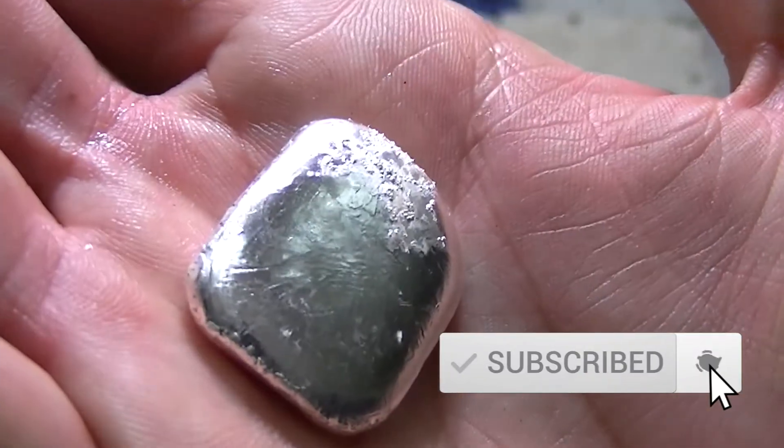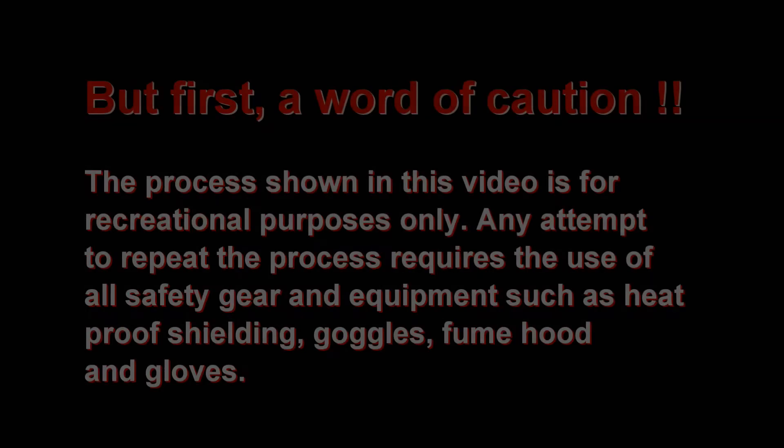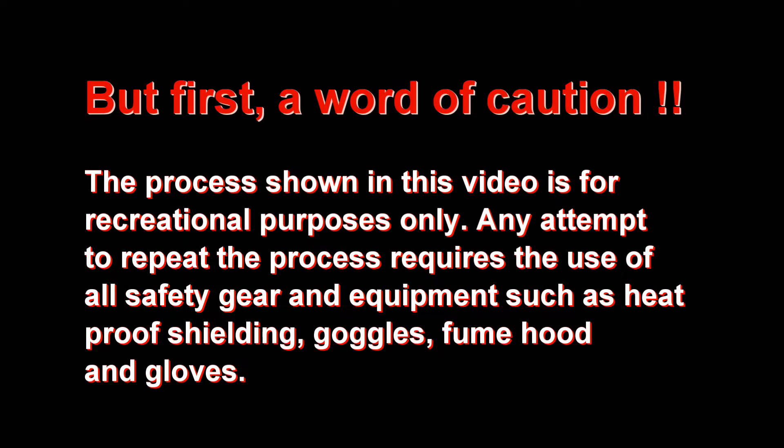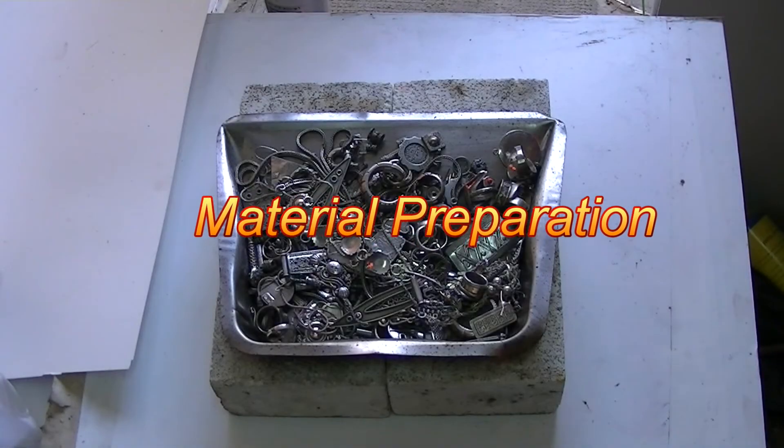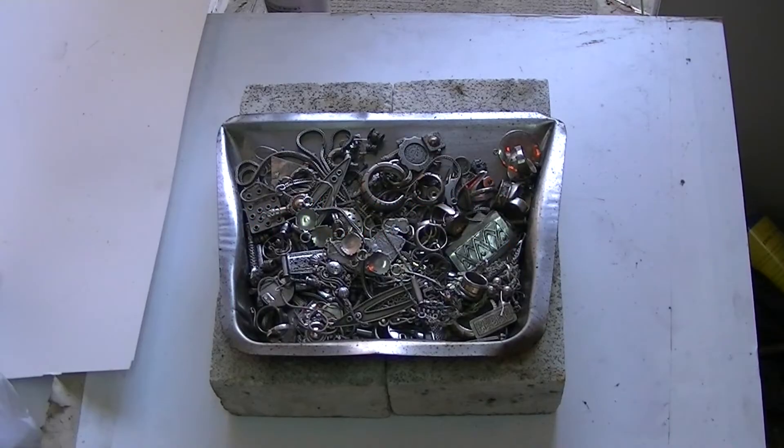But first, a word of caution. The process shown in this video is for recreational purposes only. Any attempt to repeat the process requires the use of all safety gear and equipment such as heatproof shielding, goggles, a fume hood, and gloves. Here I have about 500 grams of old sterling silver jewelry.